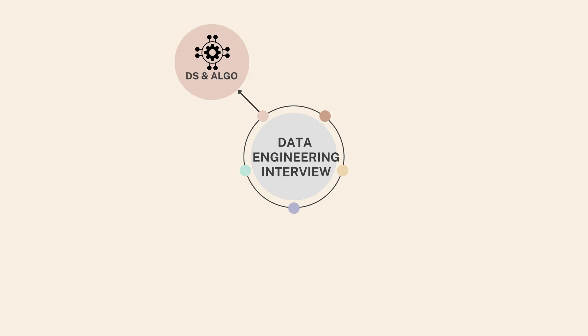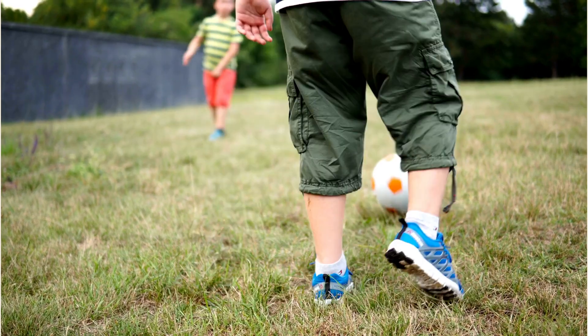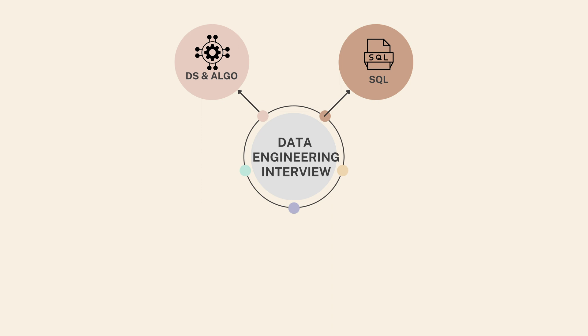The first component is data structures and algorithms. A lot of people have asked me why this is even a criteria for getting a data engineering job, but one of the things you need to consider is that data engineering is a subset of engineering in general. To be a good data engineer you need to be a good software engineer as well, so the playing field is kind of level with software engineers.